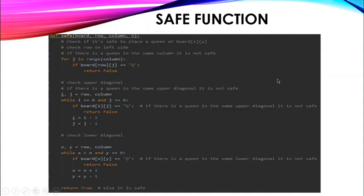The safe function is really important for the backtracking algorithm because here we check if it's safe to place a queen on the board. We check the row, then the upper diagonal, and then the lower diagonal. We check if the current cell already includes a queen. If it does, return false because we cannot place another queen there.